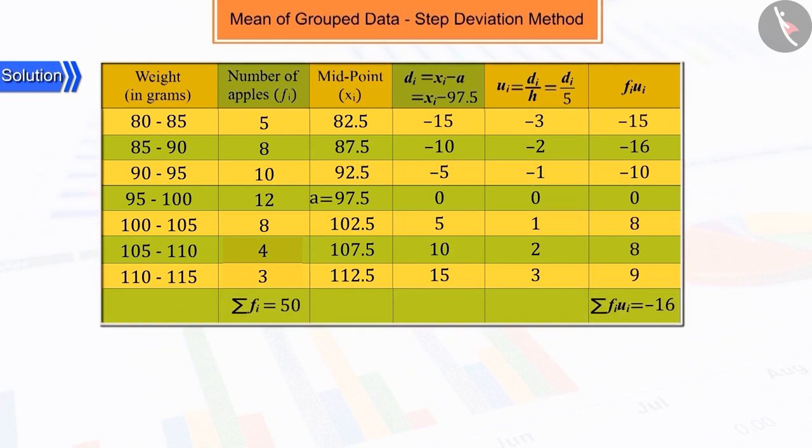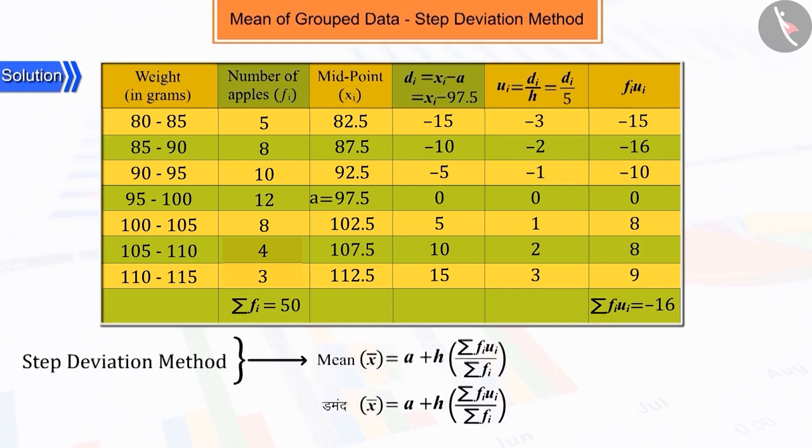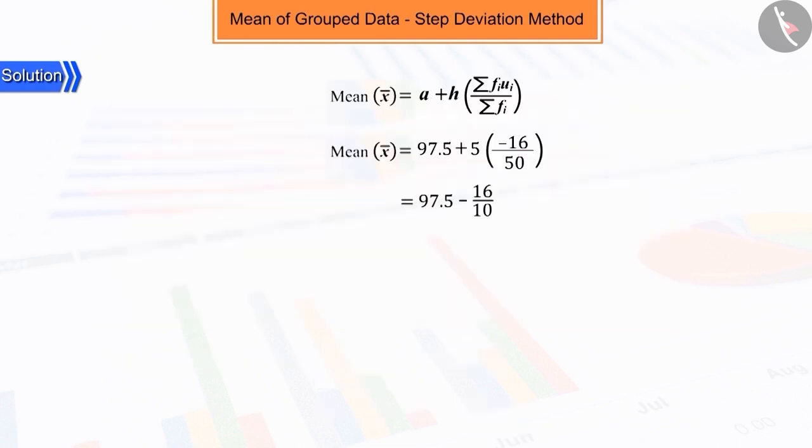Substituting the values of the assumed mean A, the class interval H, summation FI UI and summation FI in the above formula and solving, we obtain the mean as 95.90.